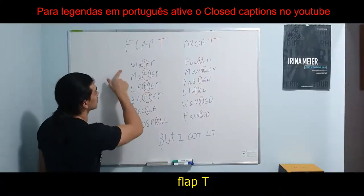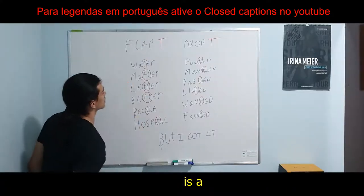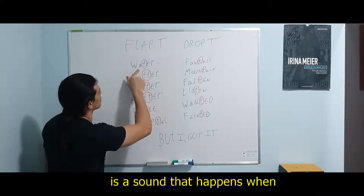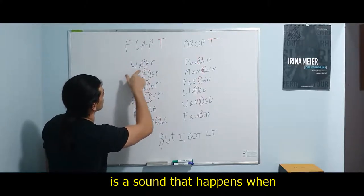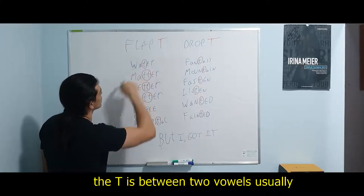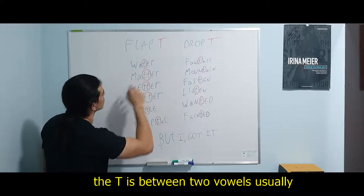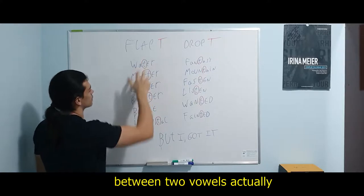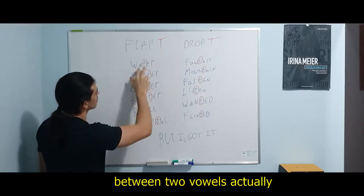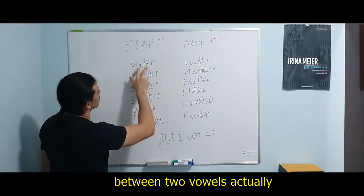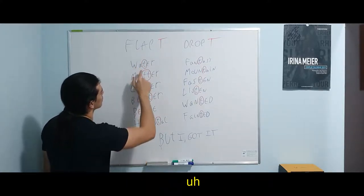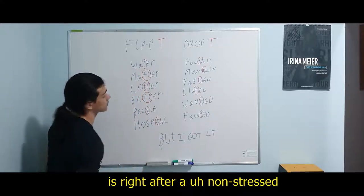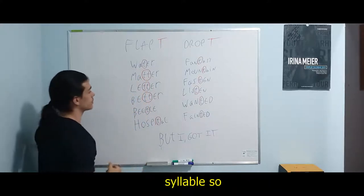Flat T is a sound that happens when the T is between two vowels — between two vowels, actually — and it is right after a non-stressed syllable.